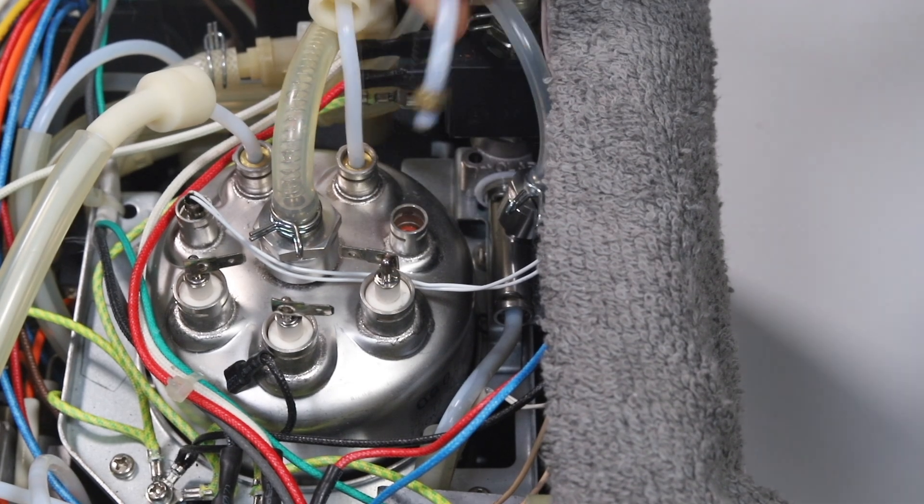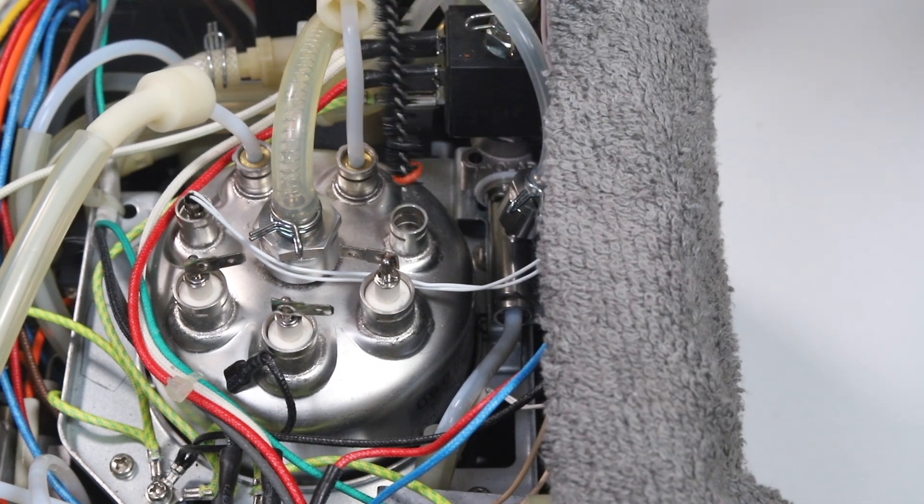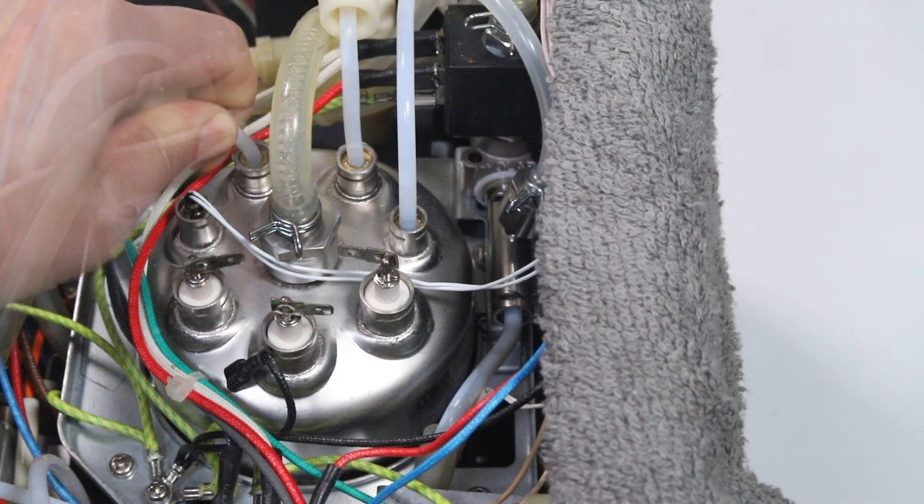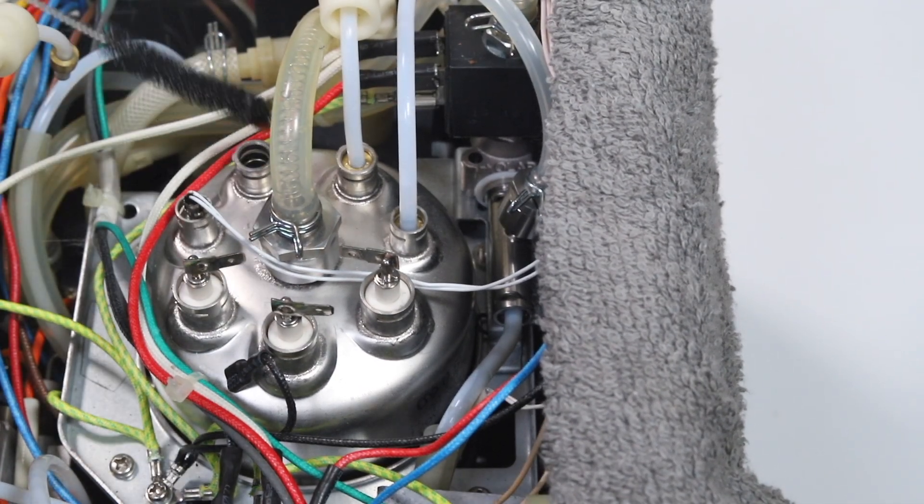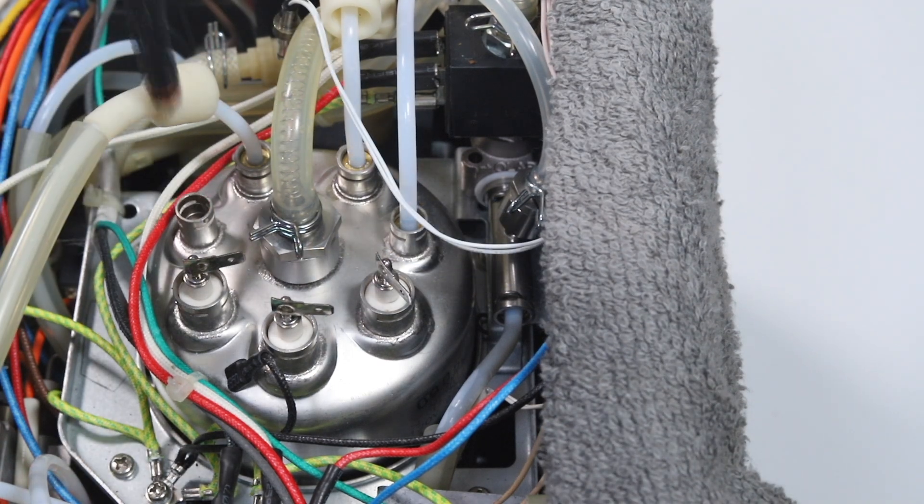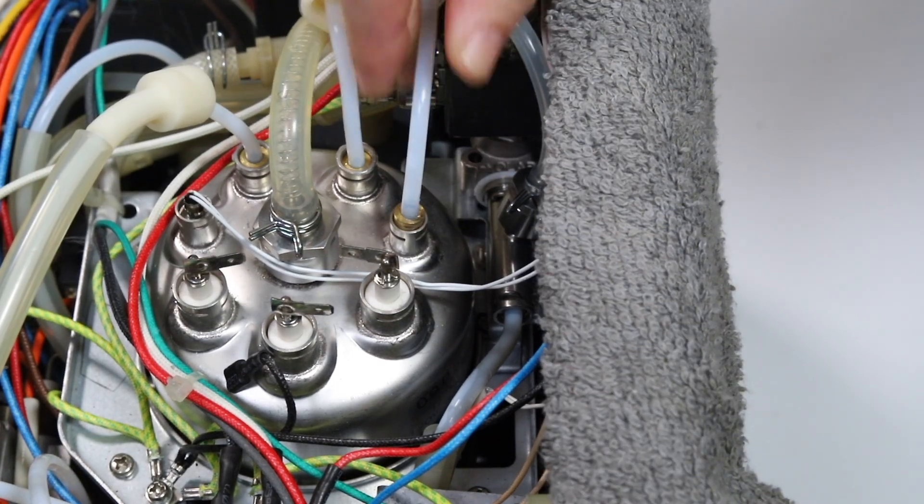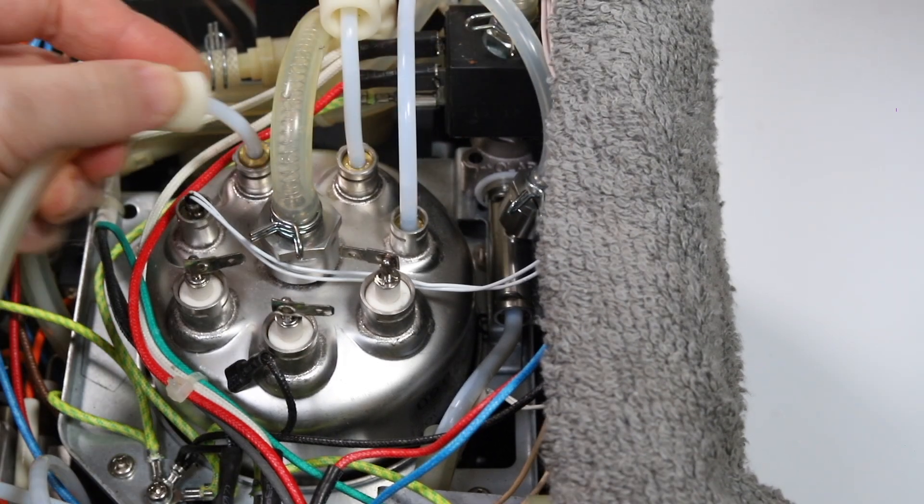To replace the O-rings, remove the tubes and attached O-rings from each outlet. Make sure no O-rings are left behind in the outlets. Replace the O-rings on the tubes before reinserting them back into their proper outlets.